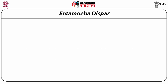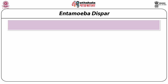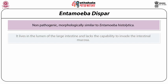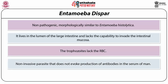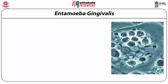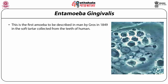Among the other species of Entamoeba — all of which are harmless commensals — Entamoeba dispar is non-pathogenic and morphologically similar to Entamoeba histolytica, living in the lumen of the large intestine but lacking the capacity to invade the intestinal mucosa. Its trophozoites lack RBCs and do not evoke production of antibodies in the serum. Entamoeba gingivalis was the first amoeba described in man by Gross in 1849. It has only the trophozoite stage — the cystic stage is absent.